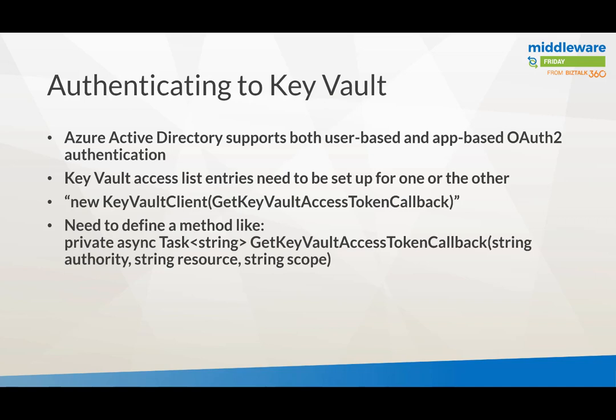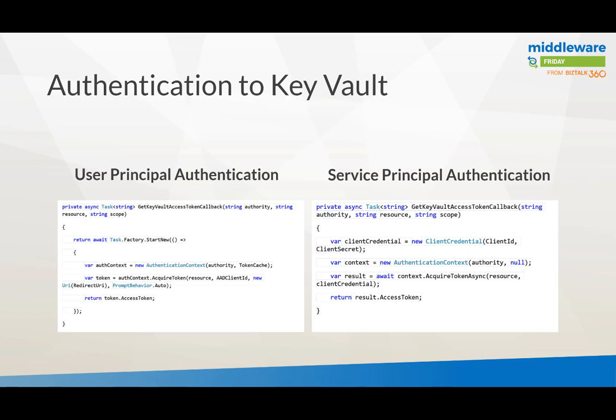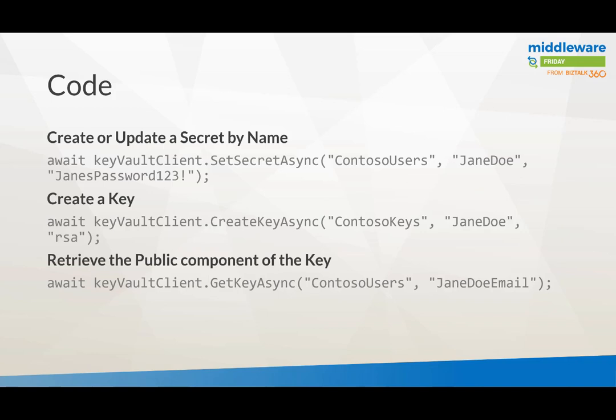Authentication can be user-based or service principal-based, and you set up the access lists in Key Vault accordingly. You need to define methods like get Key Vault access token callback — that's what you find once you import the NuGet package in your application. You can provide user principal authentication or service principal authentication. With code, you can set secrets, create secrets, and get keys, depending on the access policy tied to the account you're using.